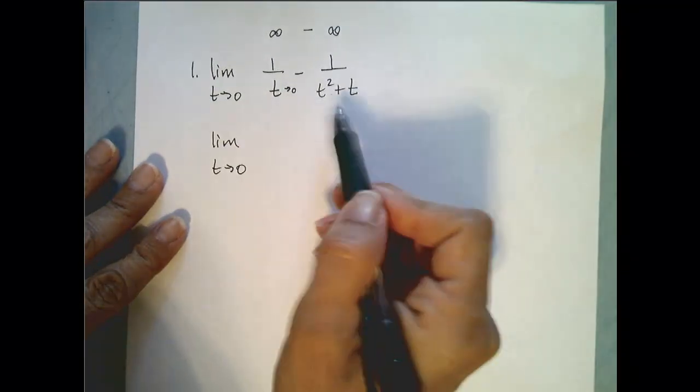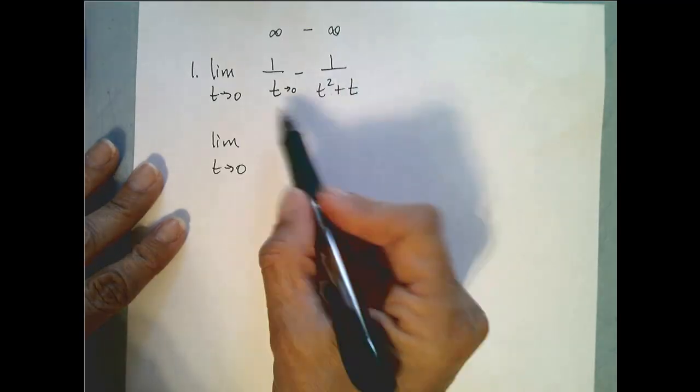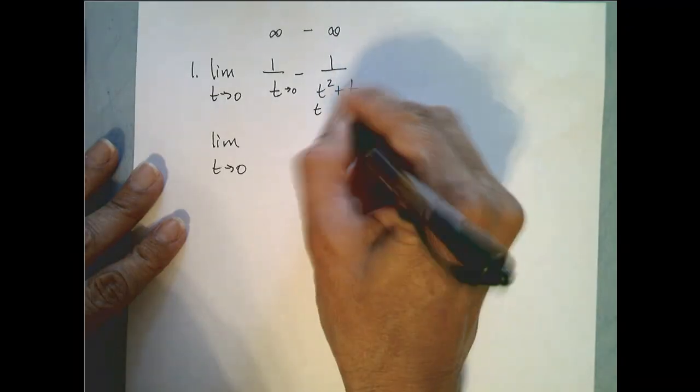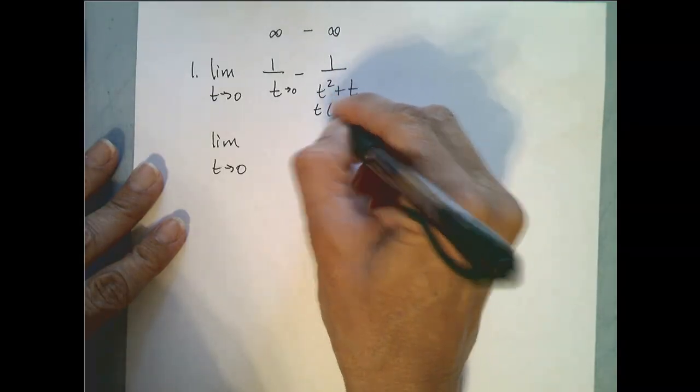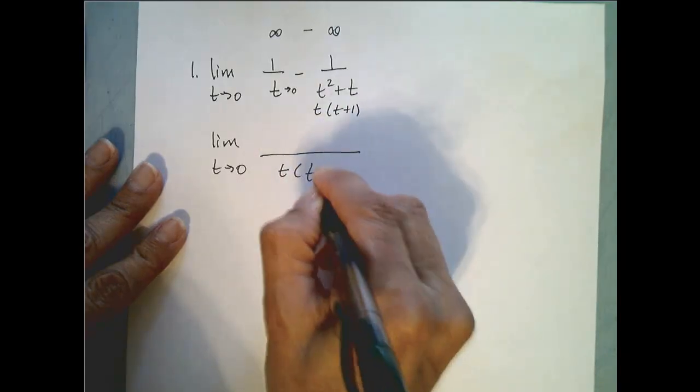So I have two fractions here which means one thing I can do is combine them and get one fraction. So I try to find the least common denominator which if you notice if you factor this one on the right you get t times t plus 1 which gives a common denominator of t times t plus 1.